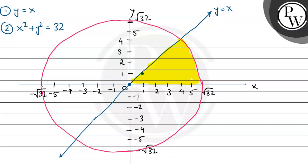Before getting the area, let's note the intersection point, which is (4, 4). We also draw the line x equals 4. As we can see, this line x equals 4 divides the region into two parts — let's call them A1 and A2.